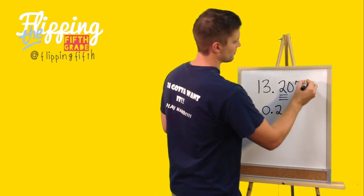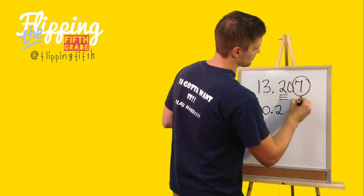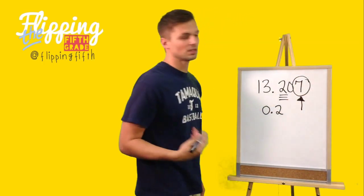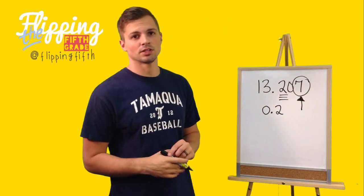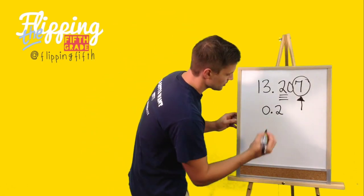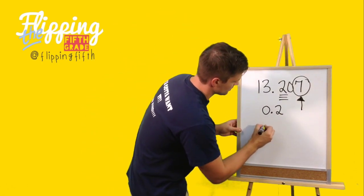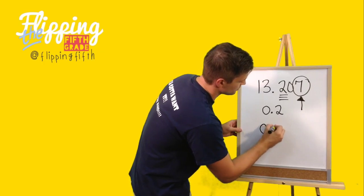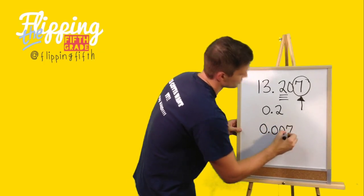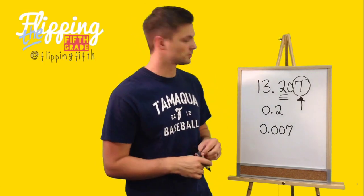What about the value of that 7? What do you think the value of that 7 is? The value of the 7 is seven-thousandths, or written out: zero point zero zero seven.